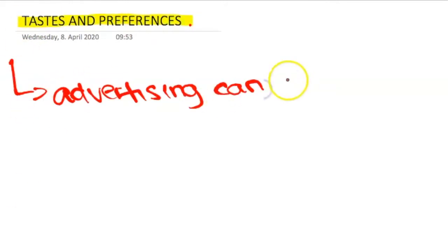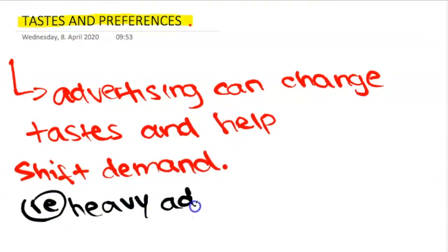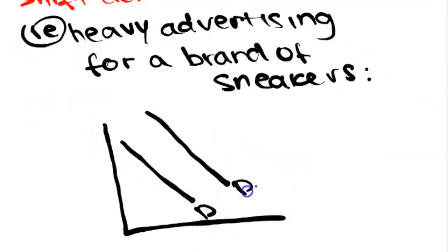The second non-price determinant of demand is preferences and tastes. A good might become more popular over time simply because there's a change in people's preferences. For instance, if it becomes more trendy to own a certain style of sneaker, then that will shift demand to the right for that.